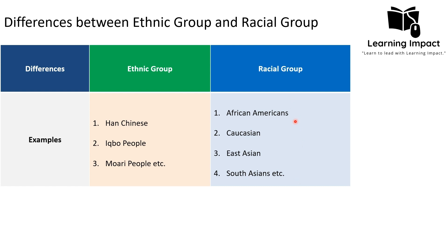For racial groups, the African-American group in the US has roots in Africa and shares a unique historical experience of slavery and systematic racism. The Caucasian racial group refers to white people including individuals with origins in Europe, the Middle East, and North Africa. East Asians include Chinese, Japanese, Korean, and Mongolian peoples who share physical features, while South Asians from India, Pakistan, Bangladesh, Nepal, Sri Lanka, and Bhutan share genetic ancestry and some common physical features.